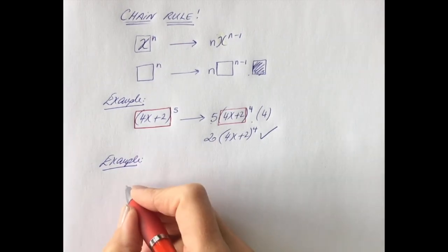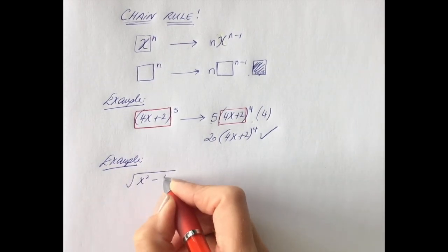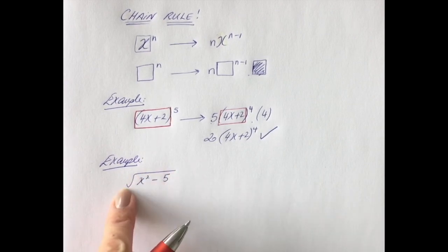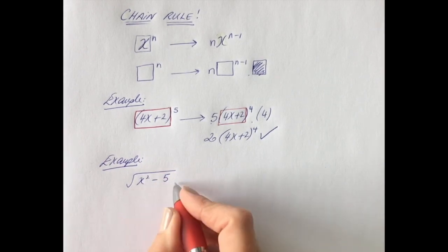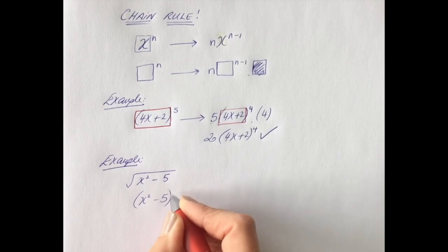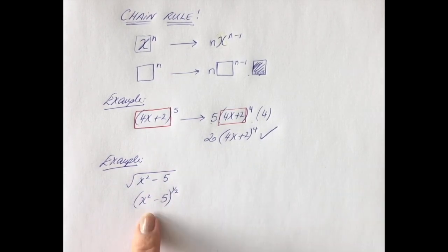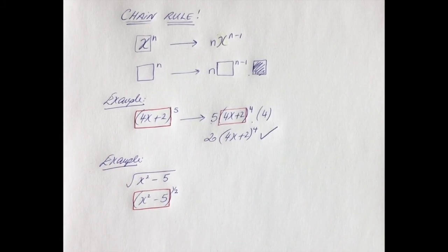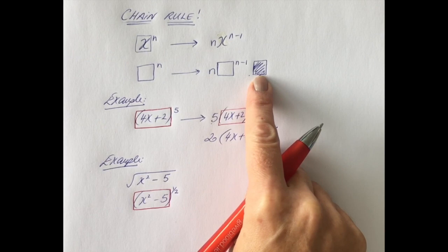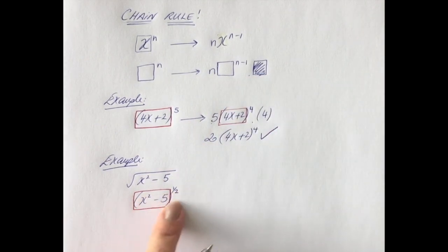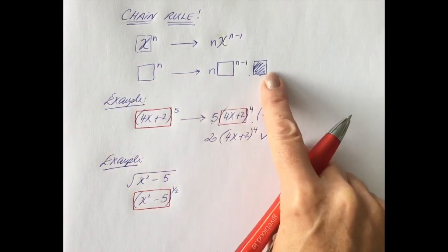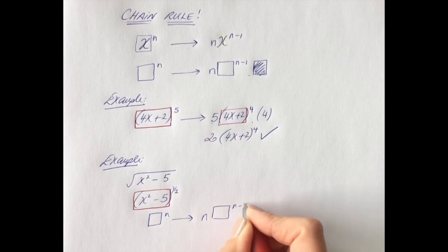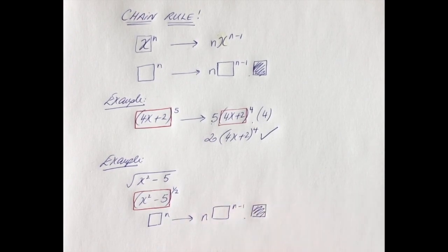Let's try another example: the square root of (x² − 5). We know that with a square root, the first thing you want to do is rewrite it as a power — the square root of (x² − 5) is the same as (x² − 5) to the power of a half. Now we realise we have something more complicated than just an X being raised to a power, and this is where your chain rule boxes come in. A good tip is to draw out your boxes straight away and then just follow them step by step.